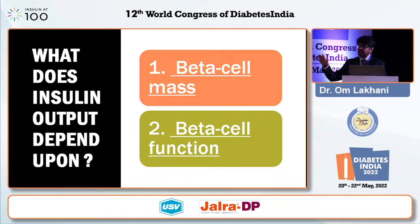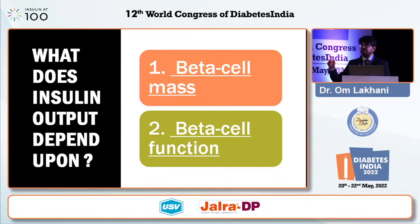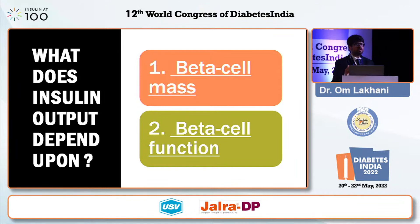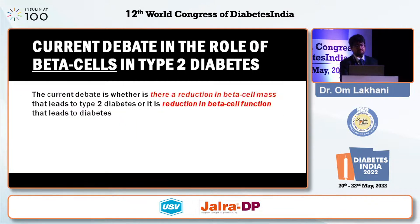If you talk about beta cell mass, there is a very interesting paradox. There are patients who undergo partial pancreatectomy — some parts of the pancreas have been removed — yet they do not develop diabetes. Their beta cell mass has been surgically reduced, yet no diabetes. And yet there are obese patients who have increased beta cell mass but still have diabetes. So more and more we are realizing that it is not just beta cell mass which results in diabetes — it is probably a dysfunction in the beta cell which is the problem.